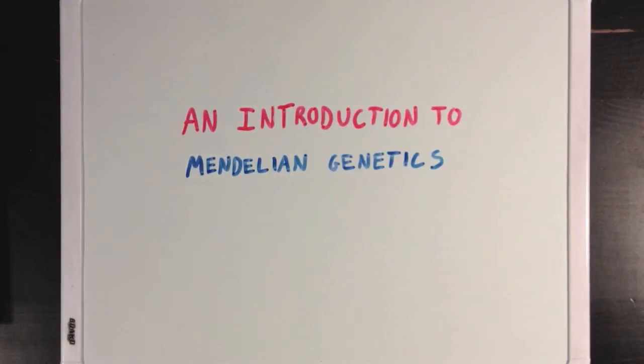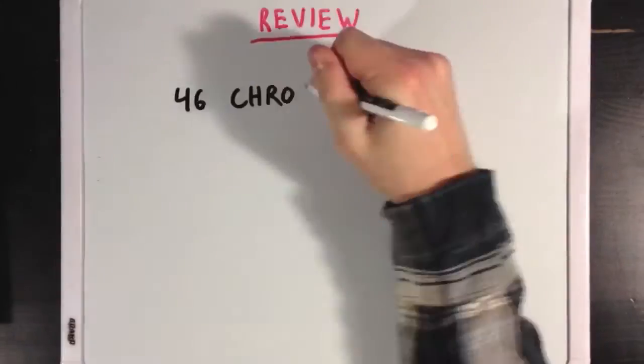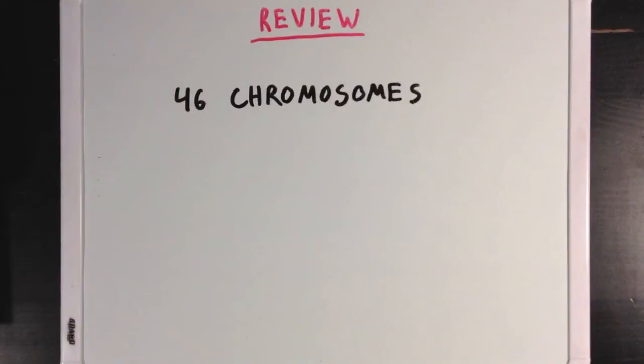An introduction to Mendelian genetics. Now before we start, let's review the idea that human cells contain 46 chromosomes, which contain the DNA that makes each cell unique.